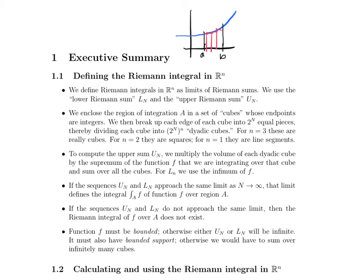In fact, it didn't really matter which function value along your interval you chose, just as long as you chose some function value on your sub-intervals. The idea was that as you sliced these sub-intervals finer and finer, each of these approximating methods would become more and more accurate, and they would all converge to the actual value of this integral — the exact area under the curve.